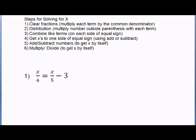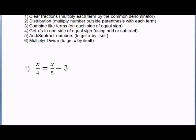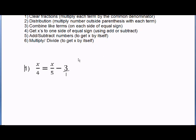So these are the steps. Let's try them. Step 1: clear fractions. We have fractions, so we're going to try to clear them. We need to multiply by a common denominator. Remember, 3 really means 3 over 1, so that's a fraction also. A common denominator between 4, 5, and 1 — one way of finding a common denominator, though it might not be the lowest, is to multiply all the denominators together. So 4 times 5 is 20, and 20 times 1 is 20. So the common denominator is 20.